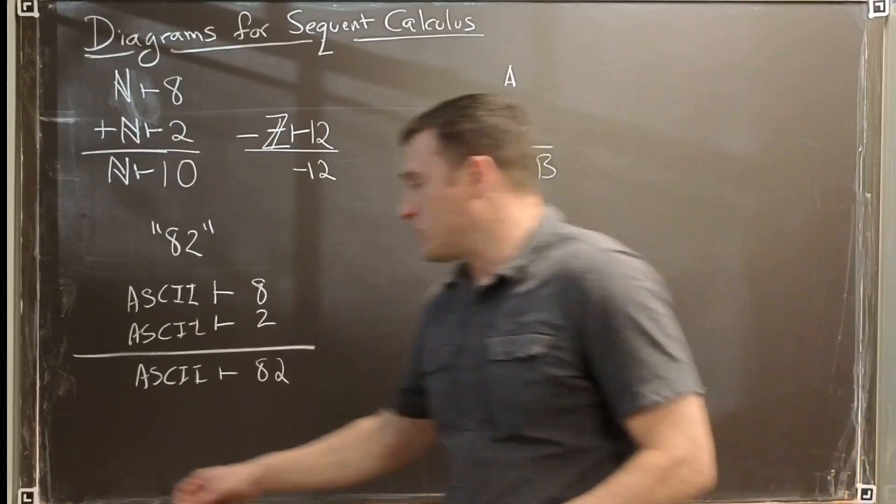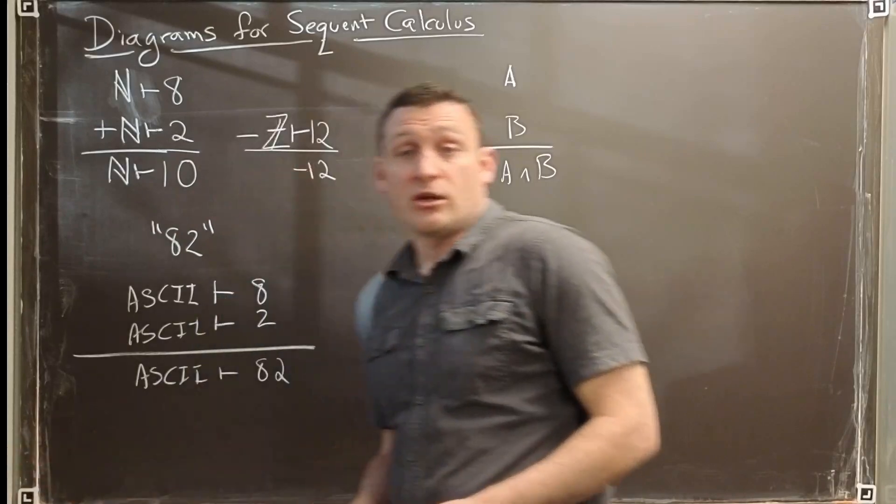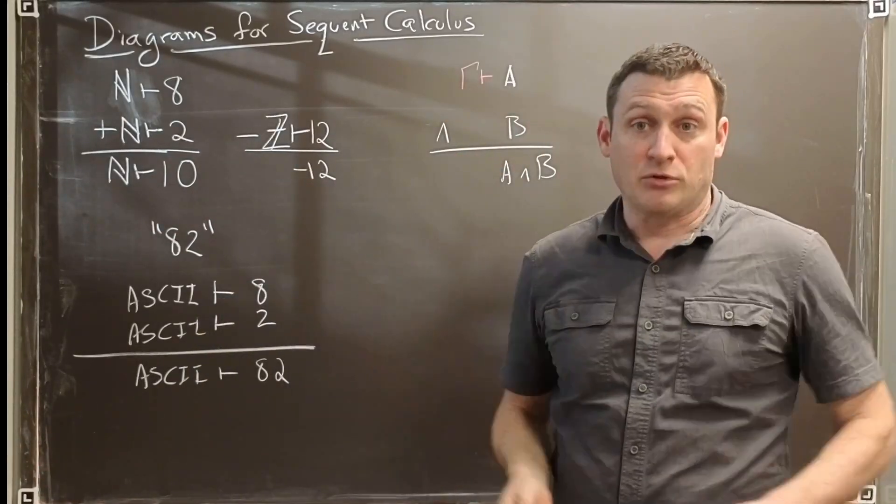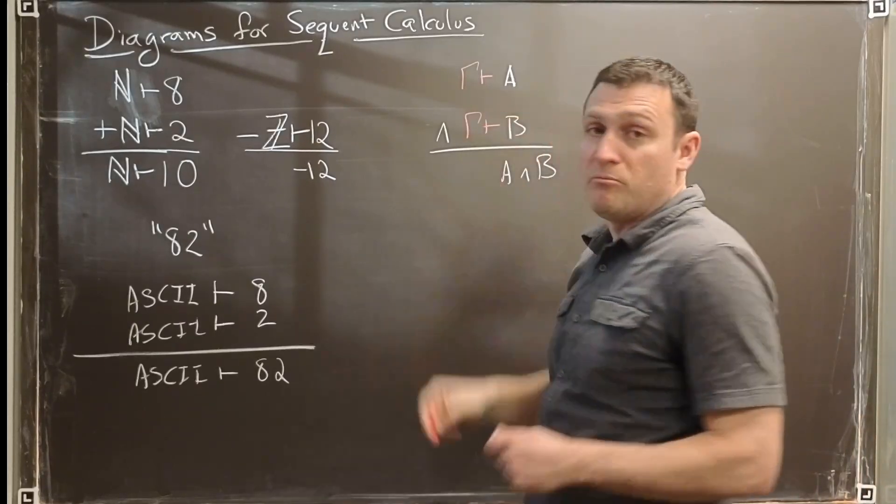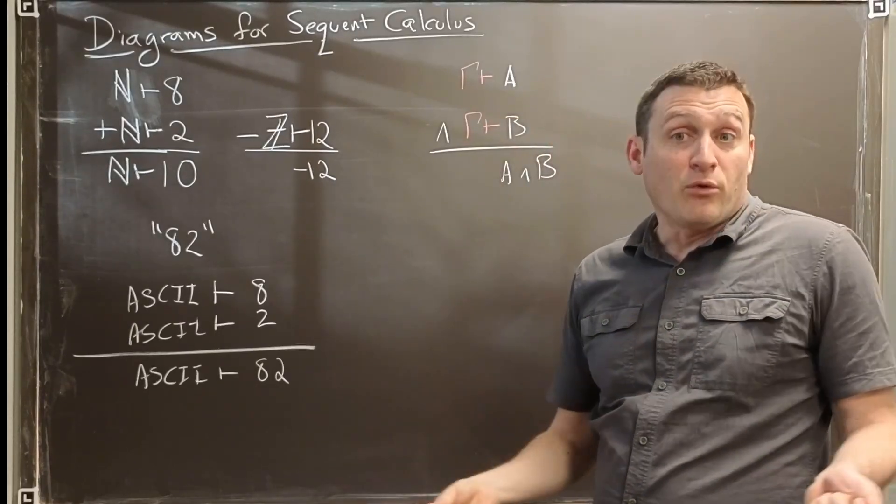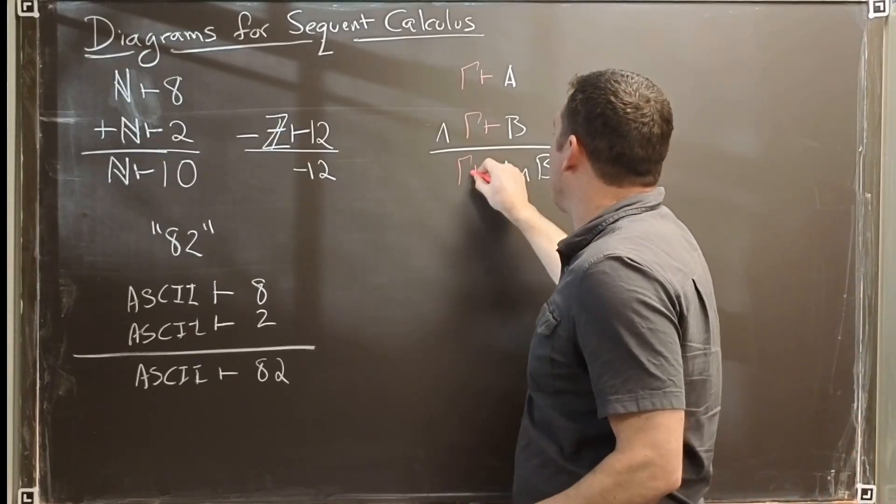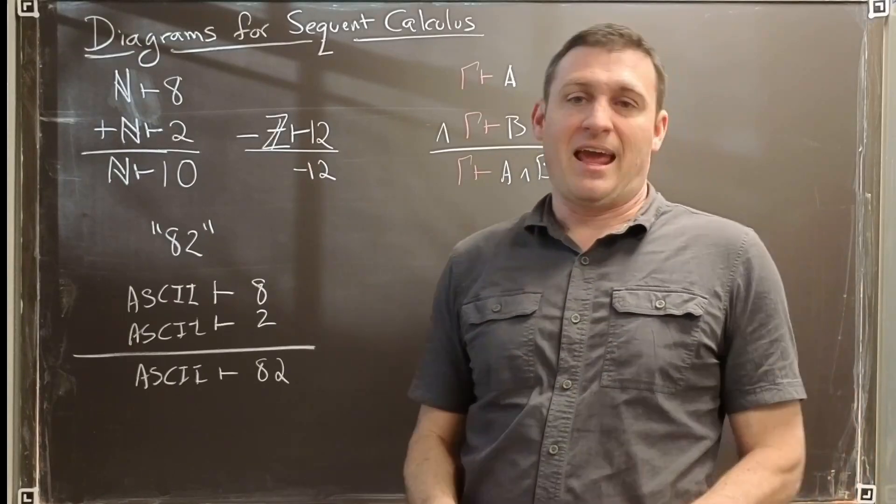Once more, if we're really being precise, we really should tell each other where these happen to be true. In the context Gamma, A was true. In the context Gamma, B was also valid. If both A and B are valid, true, in Gamma, then they are both simultaneously true and we say A and B is valid.